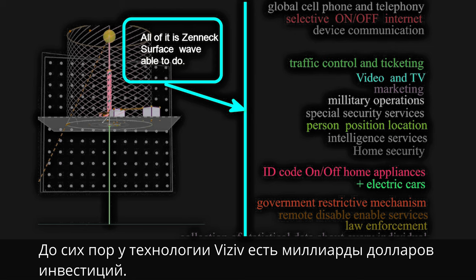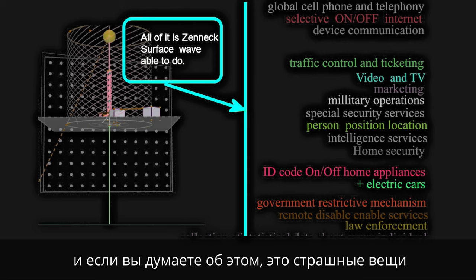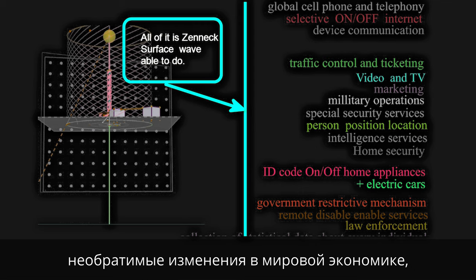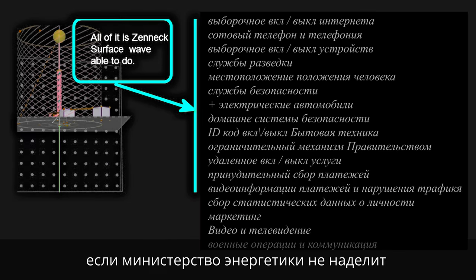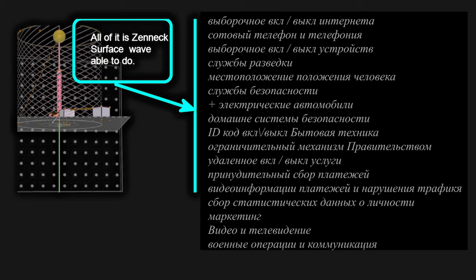Visiv Technologies has billion dollars of investment so far. The Zenneck wave can be applied to so many important regions of interest. And if you think about it, it's scary stuff. Around 2024, you may see unrecoverable changes to the world economy, unless the Department of Energy — possibly followed by the Department of Interior — puts a secrecy status and restrictions on it.